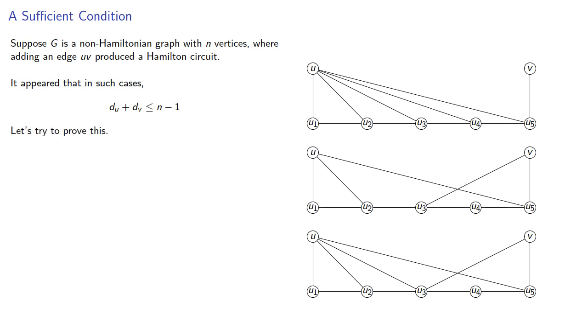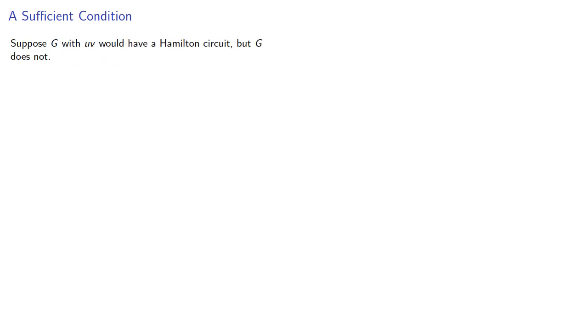Let's try to prove this. So suppose G with edge uv would have a Hamilton circuit, but G does not. Then there is a path joining u and v.